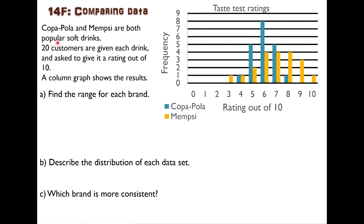Here we have two different brands of popular soft drink: Copapola and Mempsi. They're very popular. 20 customers are given each drink and asked to give it a rating out of 10, and a column graph shows the results. It's a very nice column graph because it has a scale on each axis, a label on each axis, and a title.